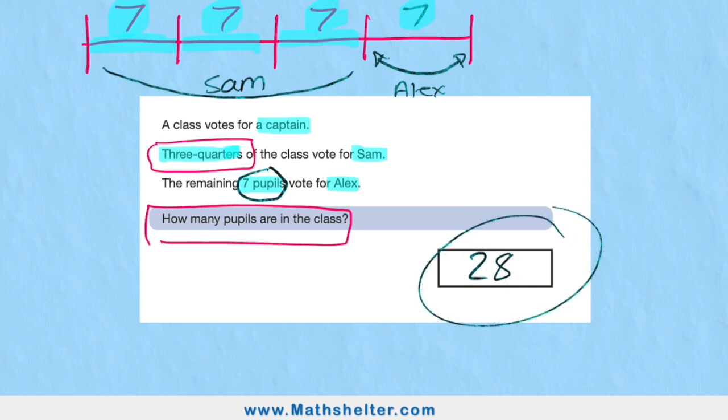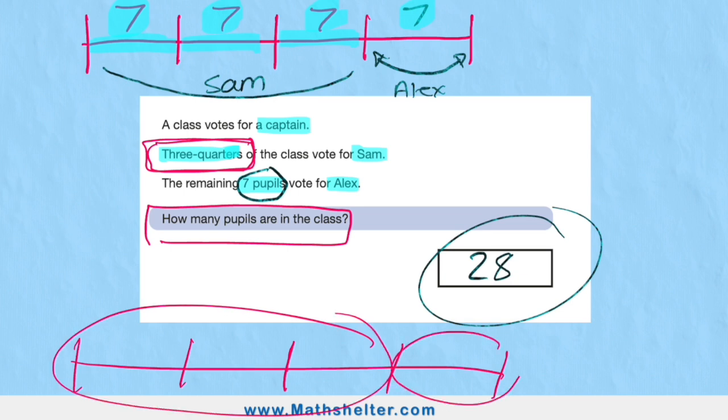Now the things to do here: always highlight the key information like we did, and then simply draw any information we can get out of it. In this case we used a bar model. We knew the class had been split into quarters, so we needed to draw our bar and then split it into quarters. We knew that three quarters were Sam and one quarter was Alex, and they kindly gave us how many had voted for Alex. Therefore, we could find out the remaining information one step at a time.